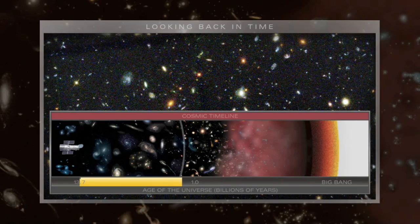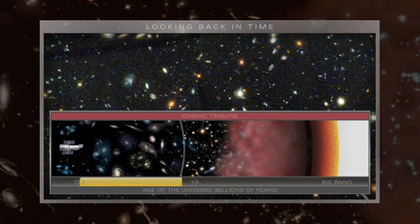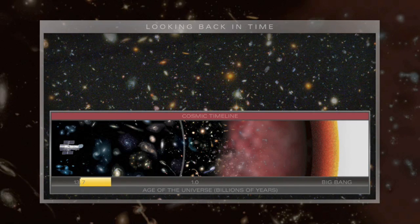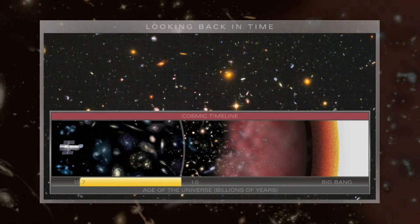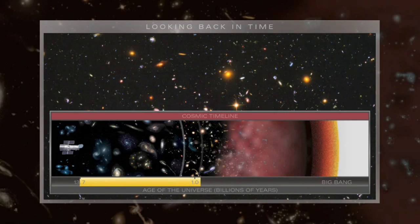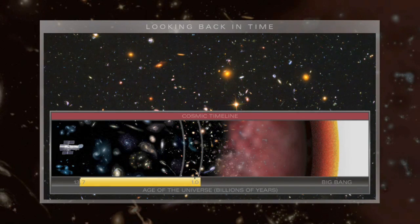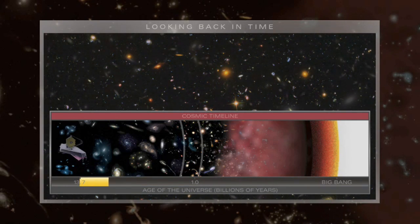In 2004, the Hubble Ultra Deep Field pushed the frontier back another 500 million years. Webb will show us light from galaxies in their infancy, 13 and a half billion years ago.